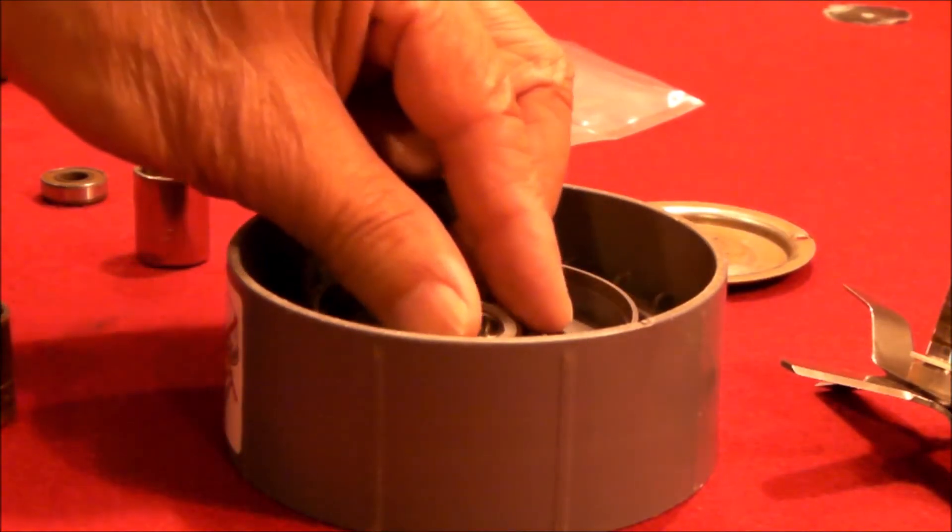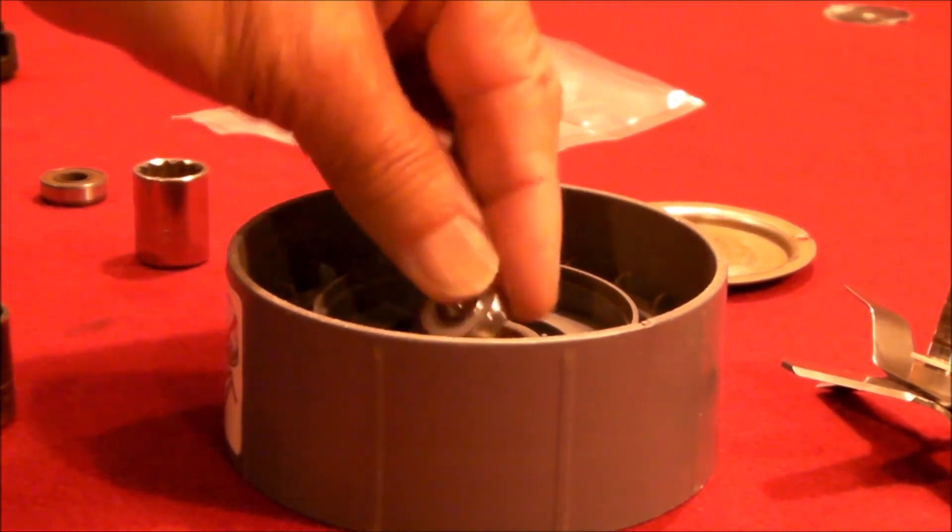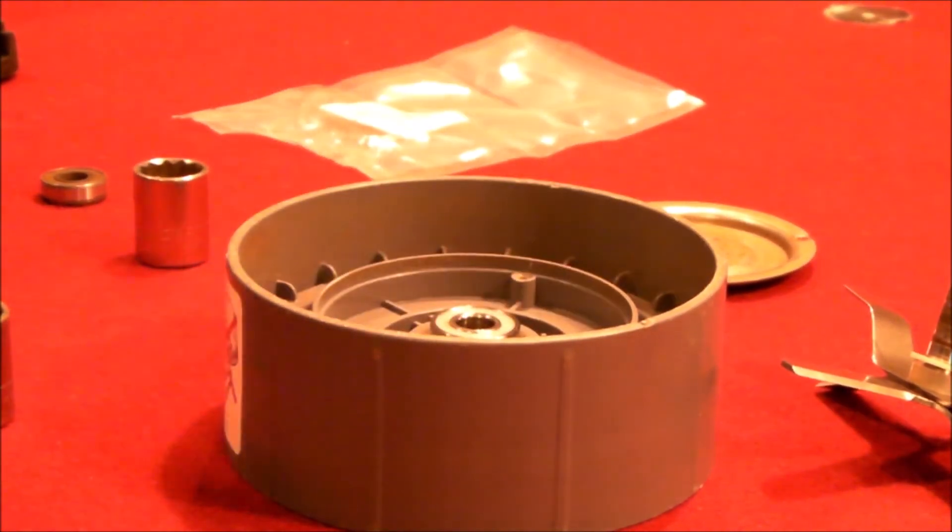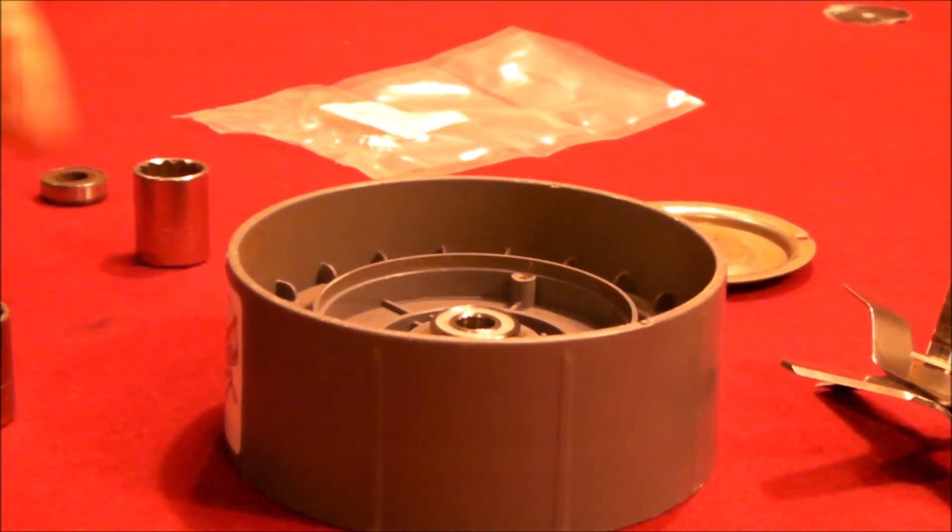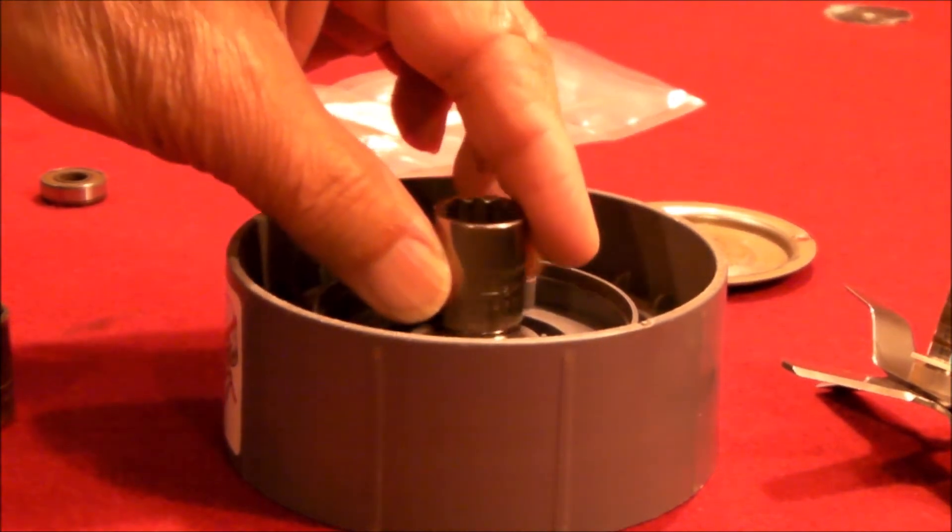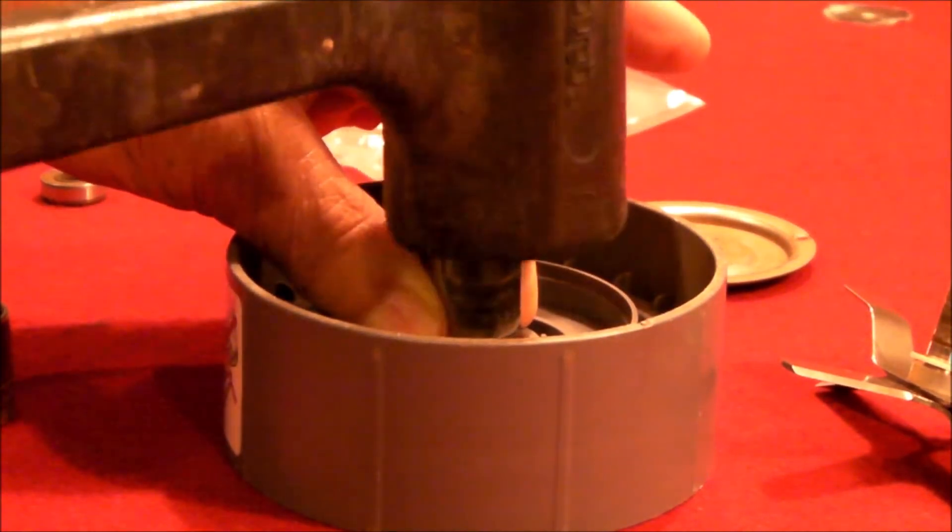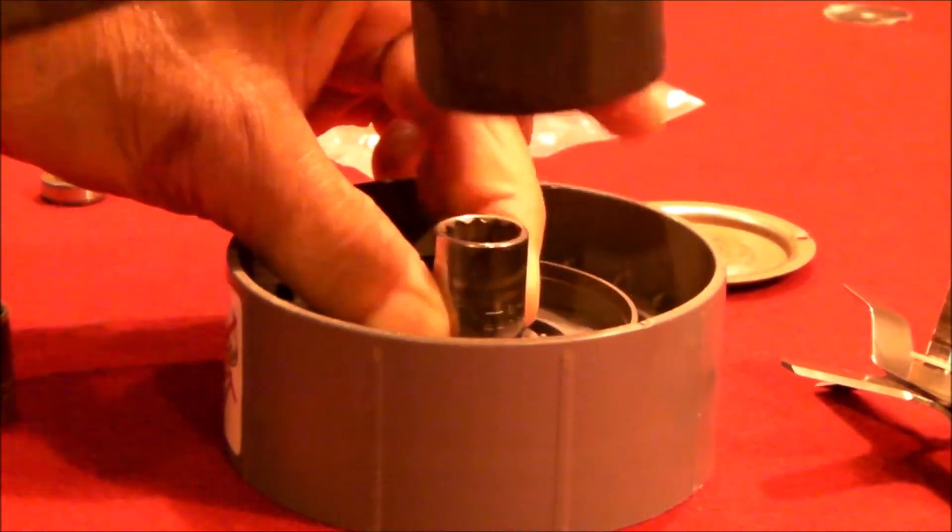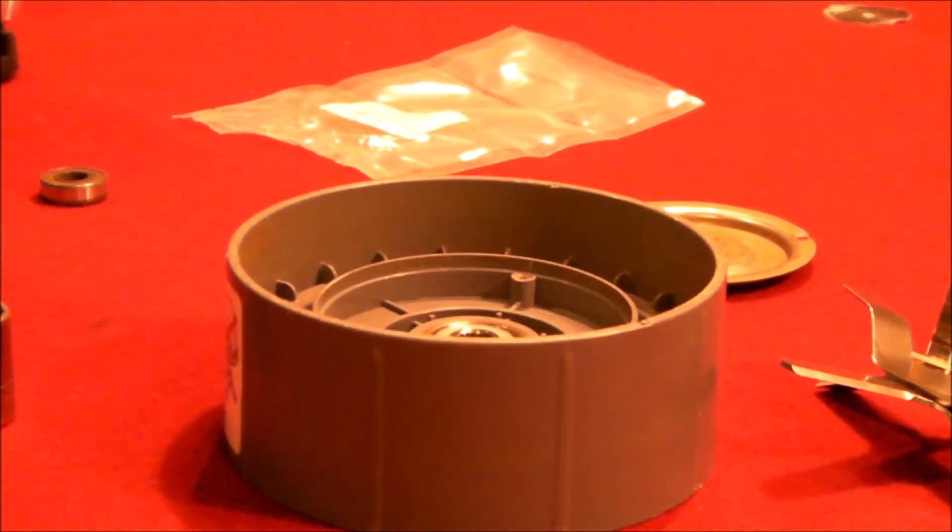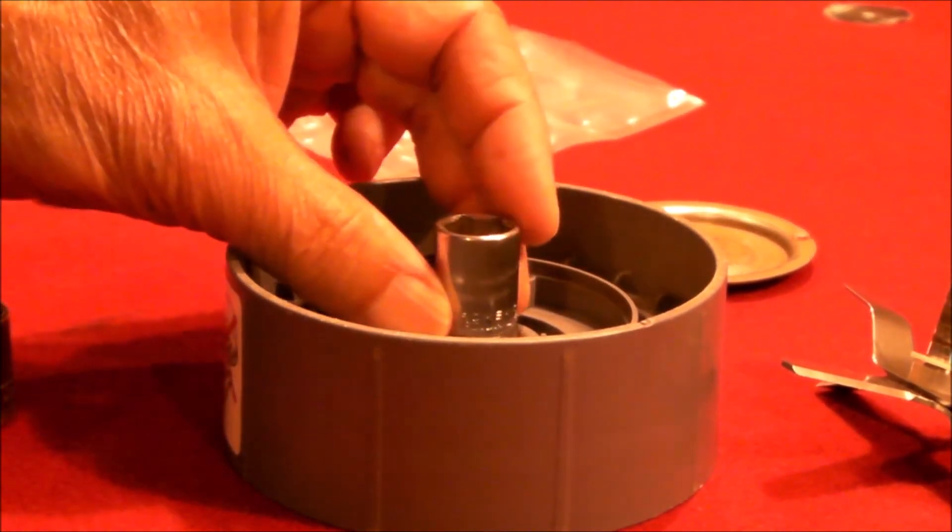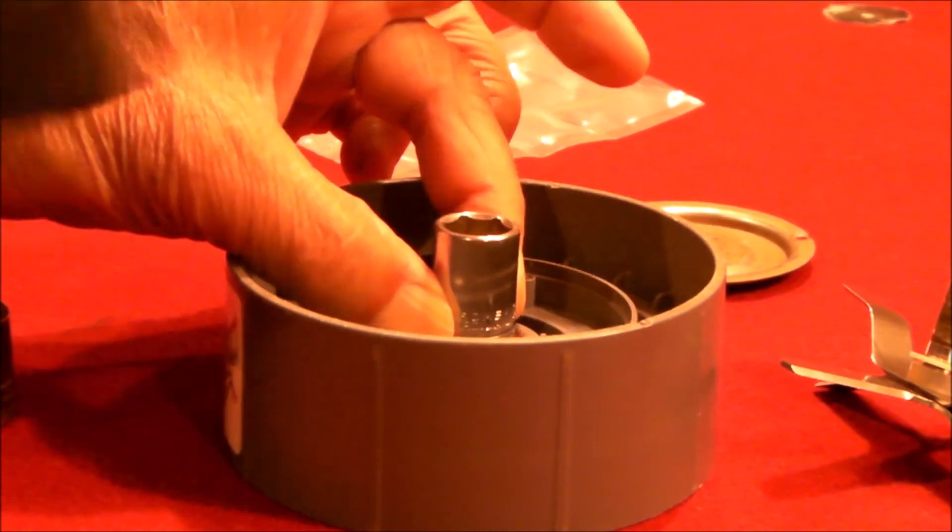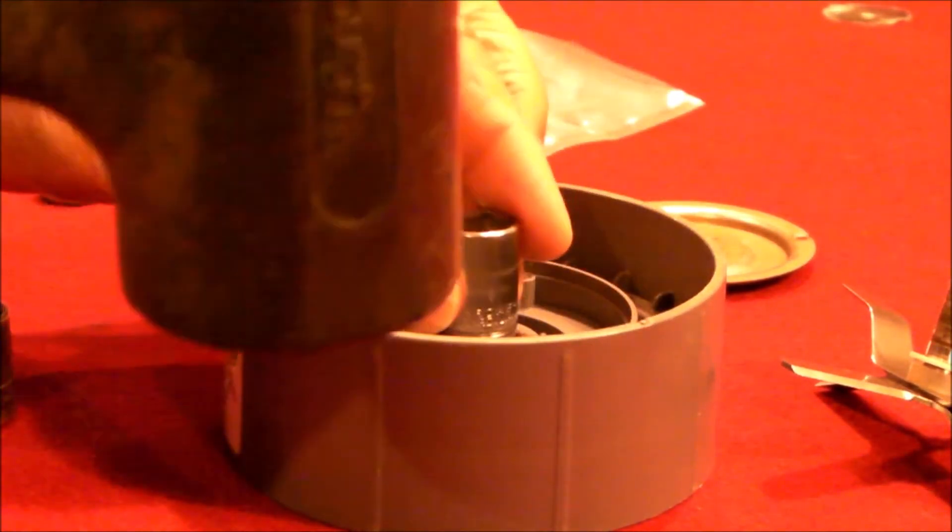Let's put the second bearing in exactly the same way. Here it is. Set it as square as I can on the hole. I'm going to use my 14 millimeter socket. Get it started. And then use either a half inch socket or a 13 millimeter socket to finish it up.